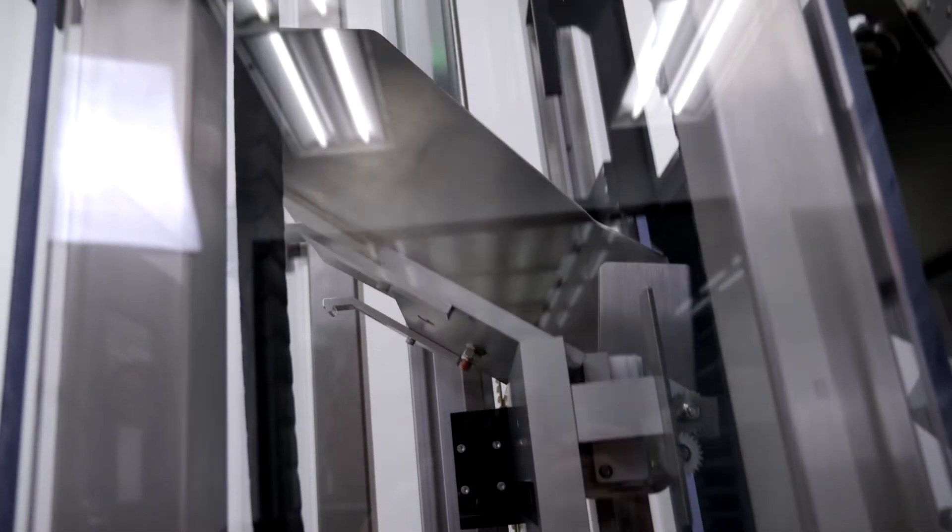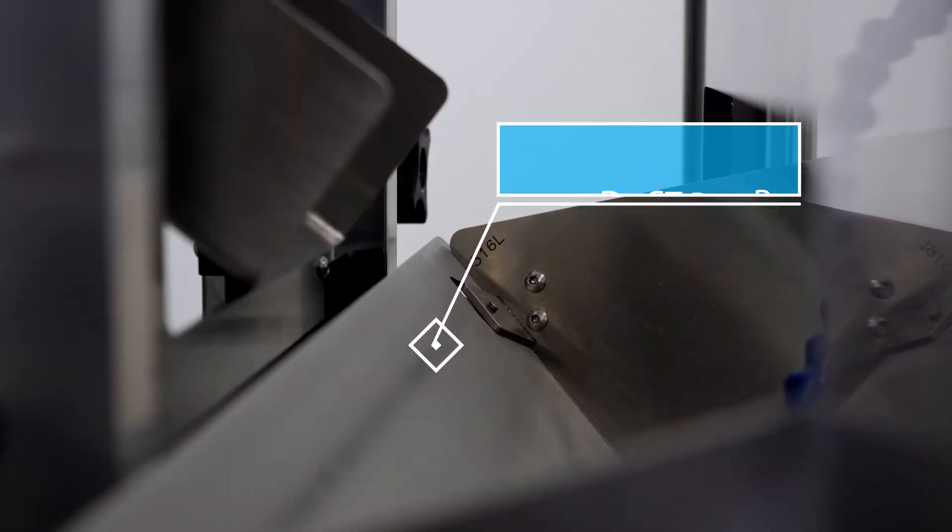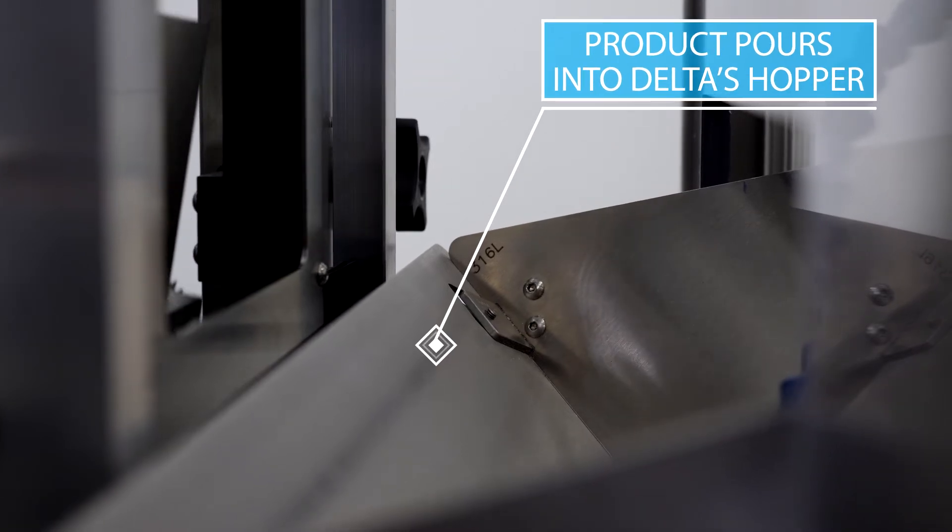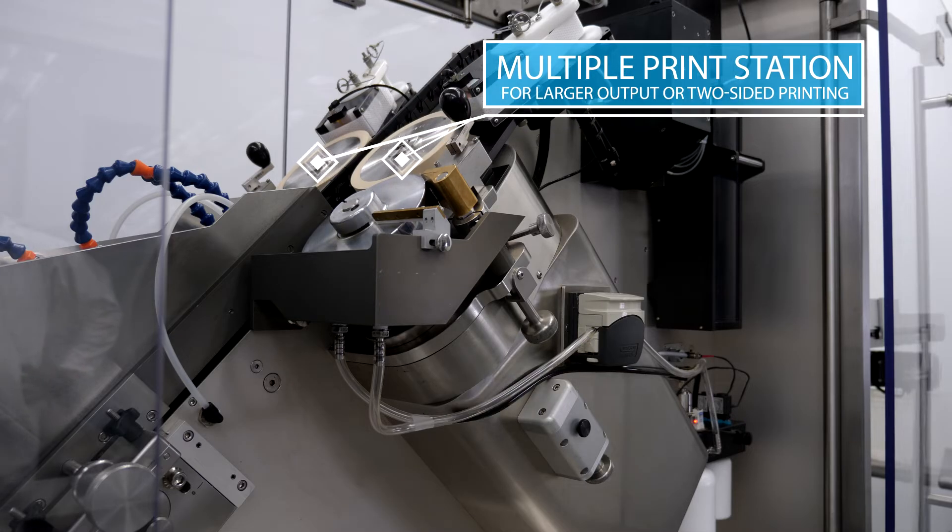To start the process, product is poured directly into the adjustable hopper as it flows seamlessly toward the print station. Engineered and built with multiple print stations, the machine can print on one or both sides of a product.